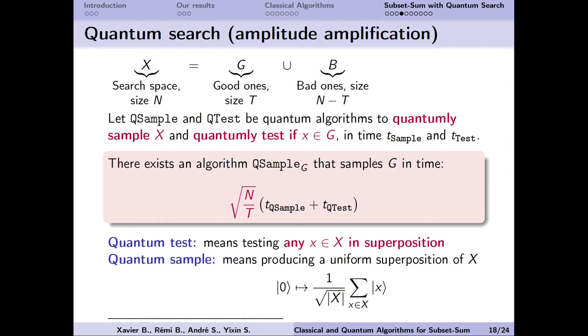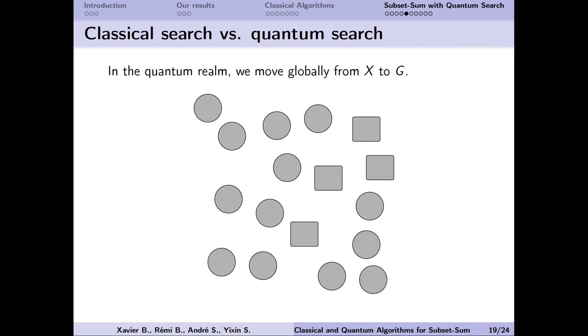But in the quantum case, we can do much better. We only need square root of N over T queries roughly. But obviously this requires the sampling and test procedures to be quantum algorithms. The way it works is that we start with a uniform superposition over the search space. This means that if we measure now, we will get a random element. But what we can do instead is to use the test algorithm to amplify the probability of the good elements and reduce the one of the others. If we amplify only once, we can still get bad elements. But if we amplify roughly square root of N over T times, then we only get a superposition of good elements with high probability.